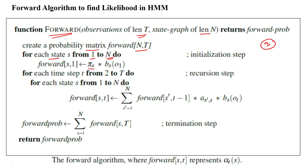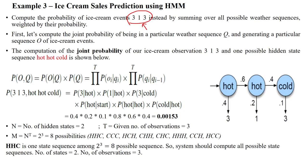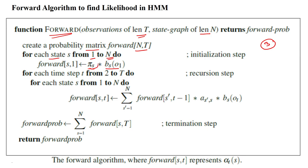Whenever we are moving, we have to multiply the initial state value and the emission probability. The initial state is the start state. From the start state, we are moving to any one of the states — that may be a cold state or a hot state. We have the probability value 0.8 to hot and 0.2 to cold. That we have to multiply with the observations. Once you reach the state, you will get some observation. This product is assigned to forward of s, 1. This is the initialization step.